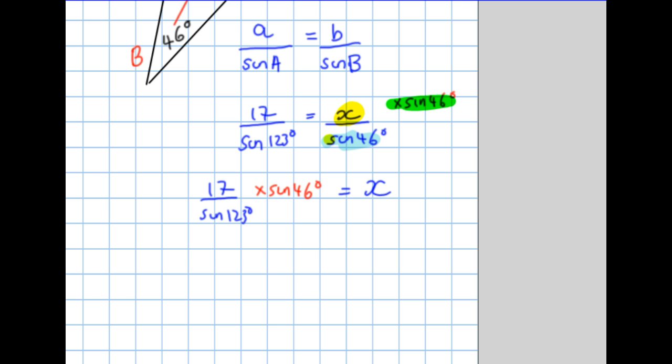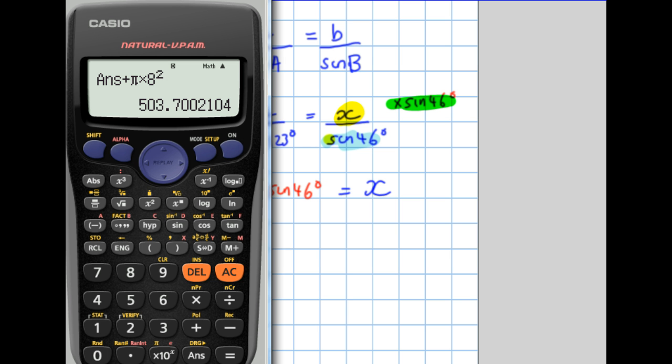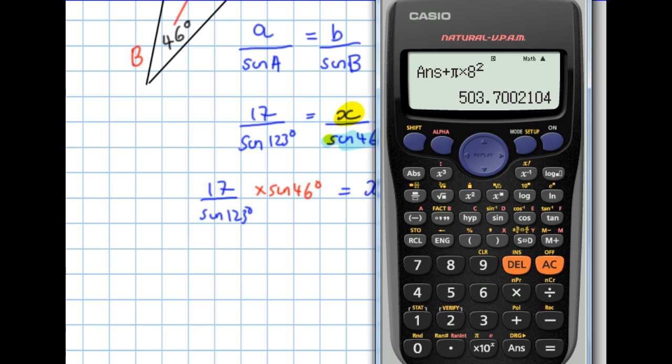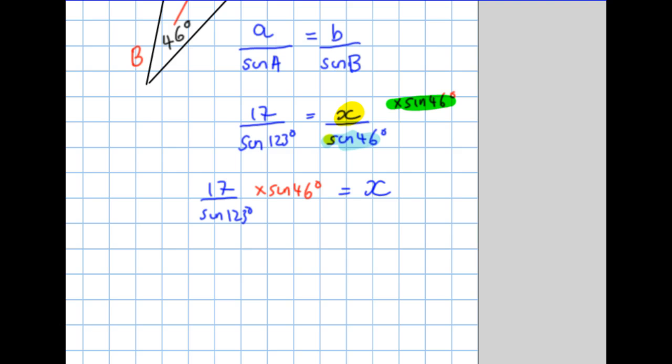And then it is a case of getting your calculator out and typing all of that in. So we do 17 over sine 123, close those brackets, make sure your cursor's up here, times sine 46, close the brackets, and there we have 14.58 to two decimal places. x equals 14.58 centimeters.